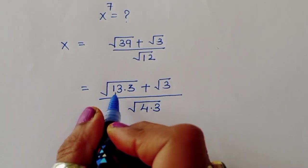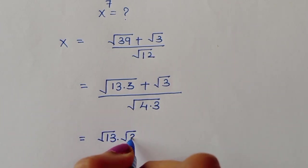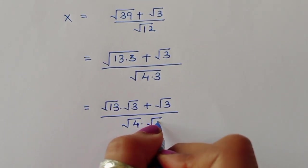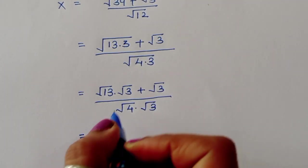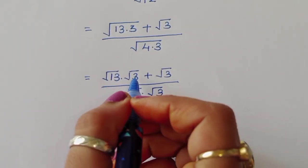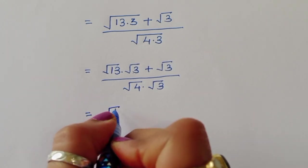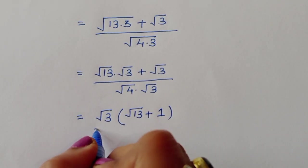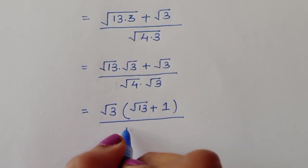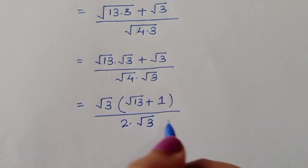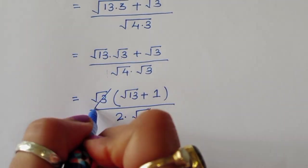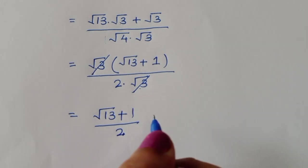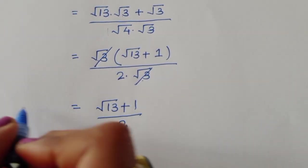We can separate: x = (√13·√3 + √3) / (√4·√3). Taking √3 common in the numerator and denominator, it cancels, leaving (√13 + 1) / 2. So x = (√13 + 1) / 2. Multiplying both sides by 2 gives 2x = √13 + 1.